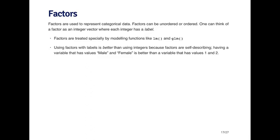You can think of a factor as an integer vector where each integer has a label. For example, you can think of it as a vector of one, two, three, where one represents a high value, two represents a medium value, and three represents a low value. So you might have a variable called high, medium, and low, and underlying in R, it's represented by the numbers one, two, and three.